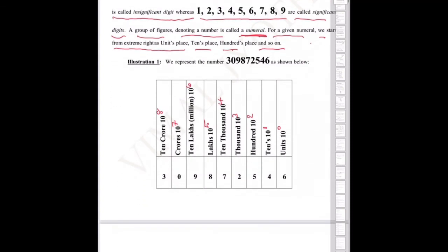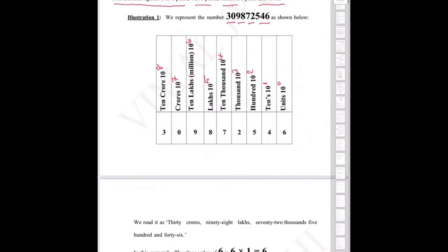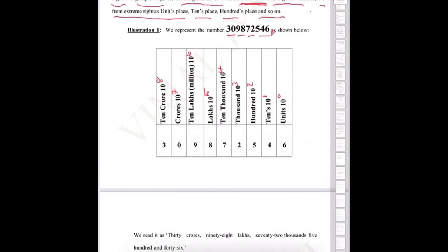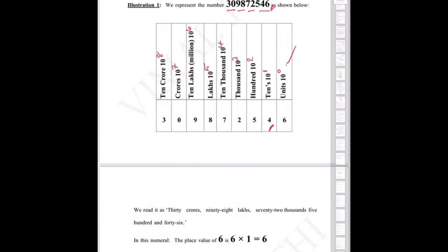Illustration 1: We represent the number 3,09,872,546. The digit 6 is in the units place, so its place value is 6 — that is 6 into 10 to the power 0. The place value of 4 is 4 into 10 to the power 1, that is 40. Place value of 5 is 5 into 10 squared, that is 500. Place value of 2 is 2 into 10 cubed, that is 2000. Place value of 7 is 7 into 10,000, that is 70,000, and so on.